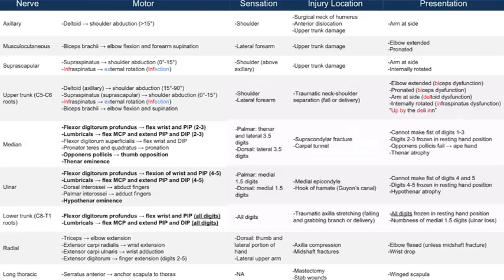Going back to the table, we have listed the locations where injury can occur: surgical neck, anterior dislocation of the humeral head, or upper trunk damage. If this occurs, there will be no abduction above 15 degrees, which means the patient will have their arm at their side.